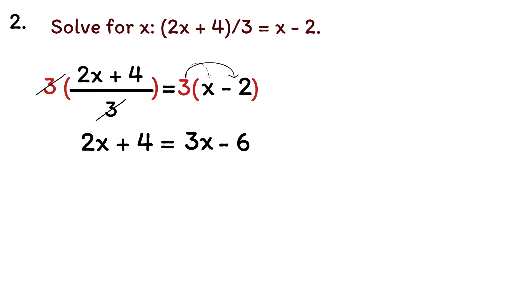We now have 2x plus 4 equals 3x minus 6. To isolate the x variable, we need to get all the x terms on one side of the equation and all the constant terms on the other side.